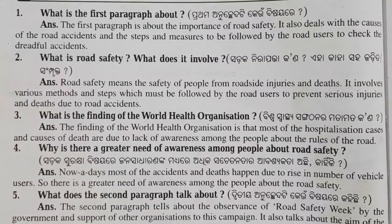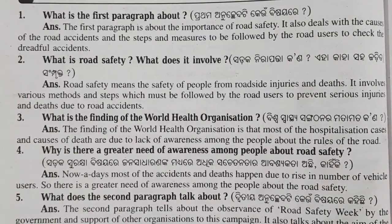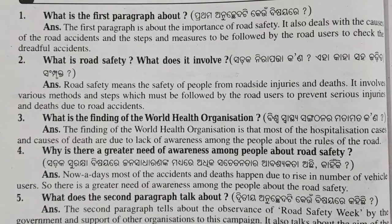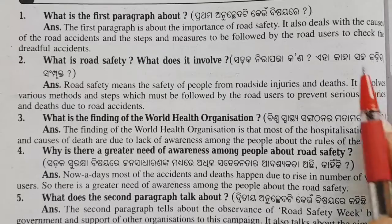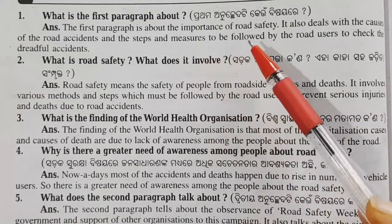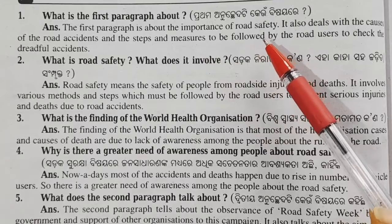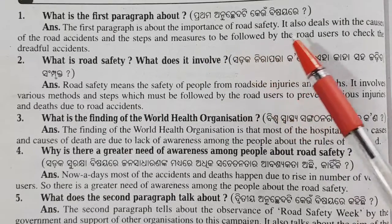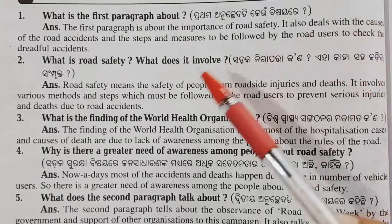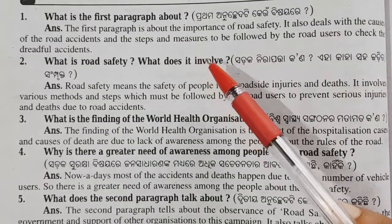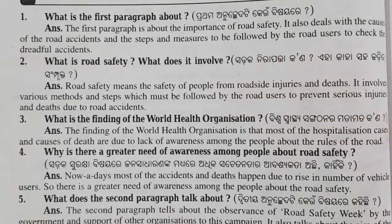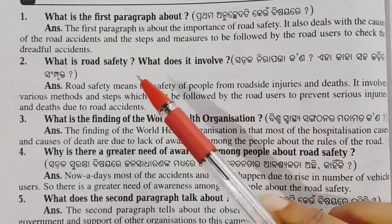The first question is: what is the first paragraph about? The first paragraph is about the importance of road safety. It also deals with the causes of road accidents and the steps and measures to be followed by the road users to check the dreadful accidents.